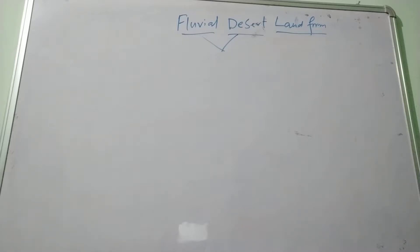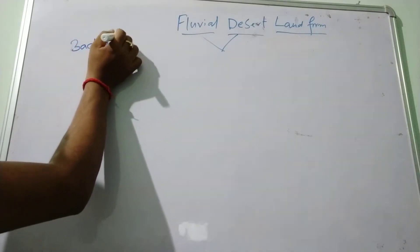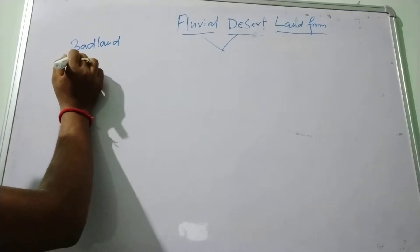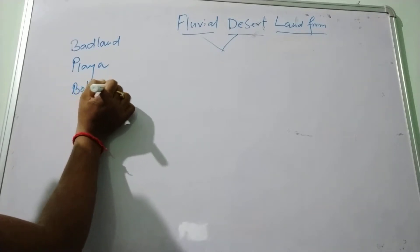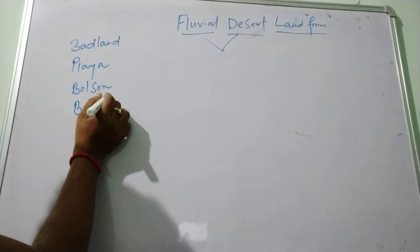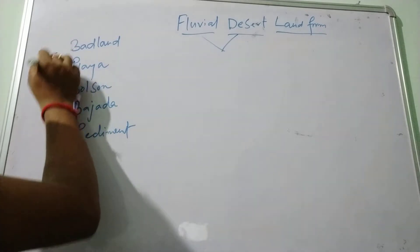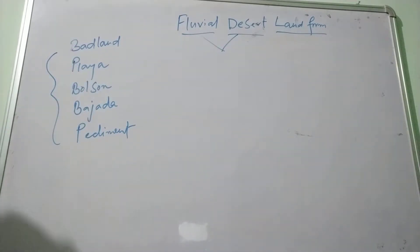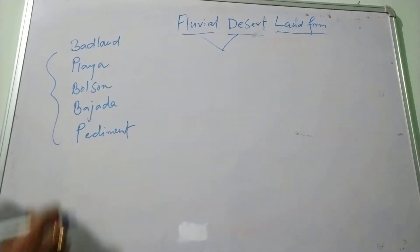The high atmospheric temperature and the most important landform formed due to fluvial action in desert areas is known as the badland. These are the most important features found in desert areas due to fluvial activity.